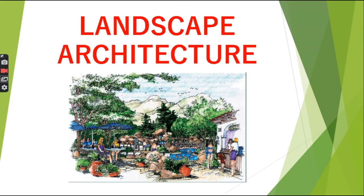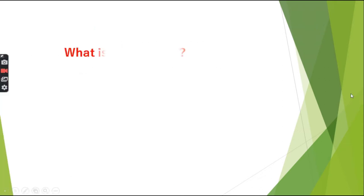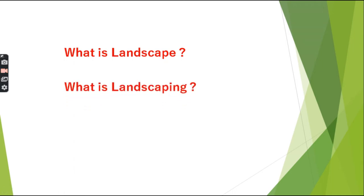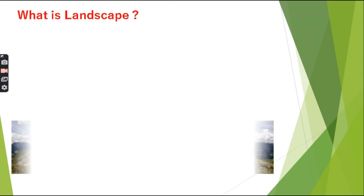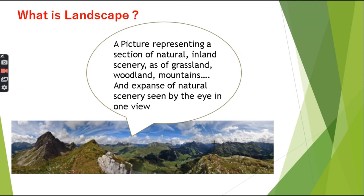For that, first of all, we are going to look at three basic terms. First one is, what is Landscape? And the second is, what is Landscaping? And third is, what is Landscape Architecture? So, first of all, what is Landscape? A picture representing a section of natural inland scenery has grassland, woodland boundaries.